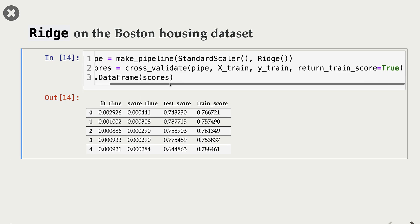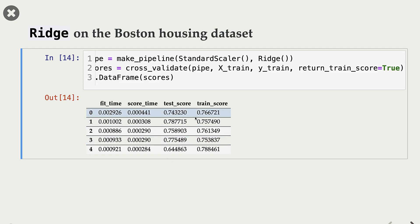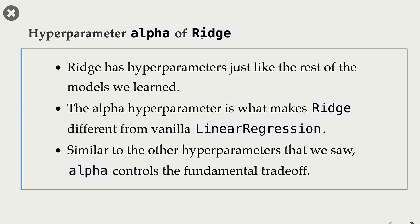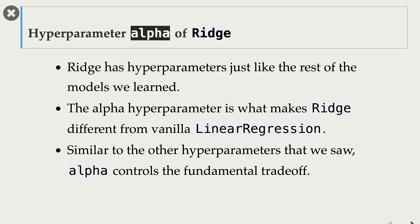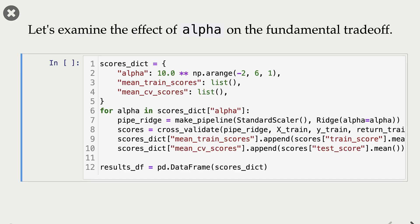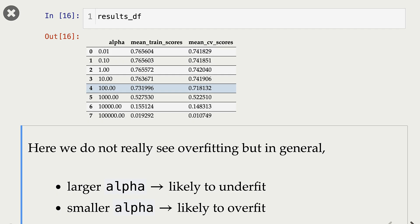I'm carrying out cross-validation with the pipeline, and these are our validation scores and train scores. Our results seem okay. Ridge is different from vanilla linear regression in that it has the complexity hyperparameter alpha. Similar to other hyperparameters we have seen, alpha controls the fundamental trade-off. Let's examine the effect of alpha by sweeping through several values, storing mean train scores and mean cross-validation scores in each case. Here are our results.